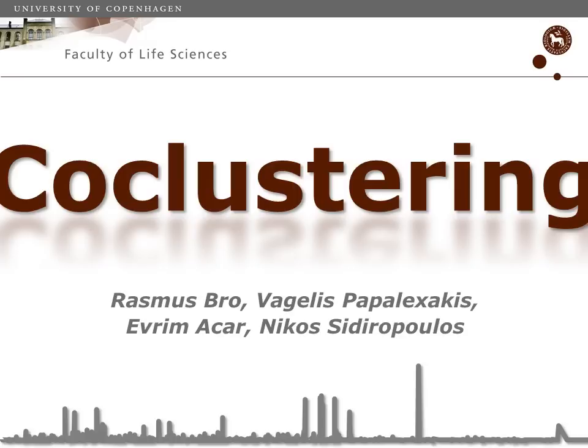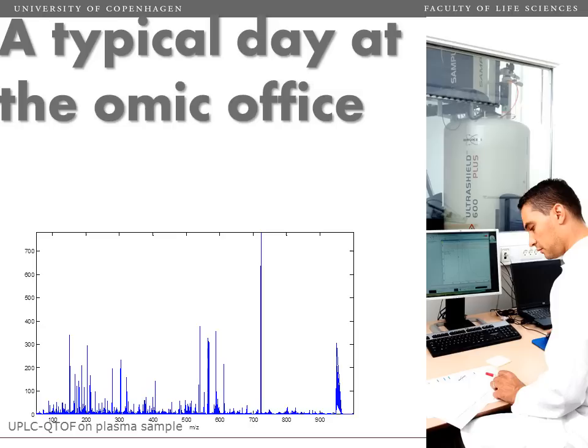Co-clustering is a method that allows you to find select areas of interest in a big data set. Unlike methods like PCA, we don't try to describe everything but try to find the most unique and interesting patterns in data, and that can be of use in certain situations. In this talk I'm going to exemplify how co-clustering can be used and also show when it might not work as well as one would prefer.